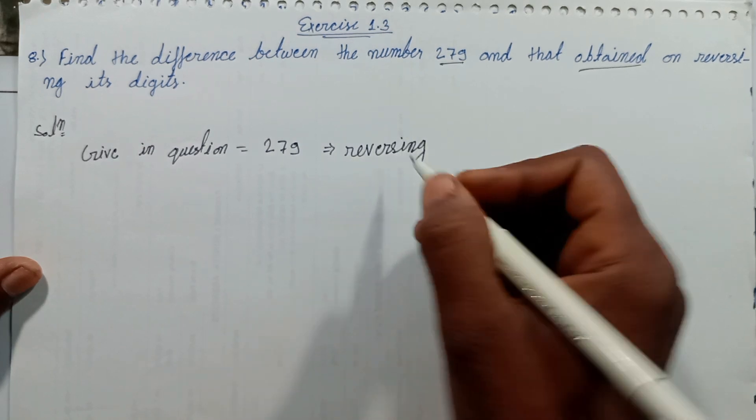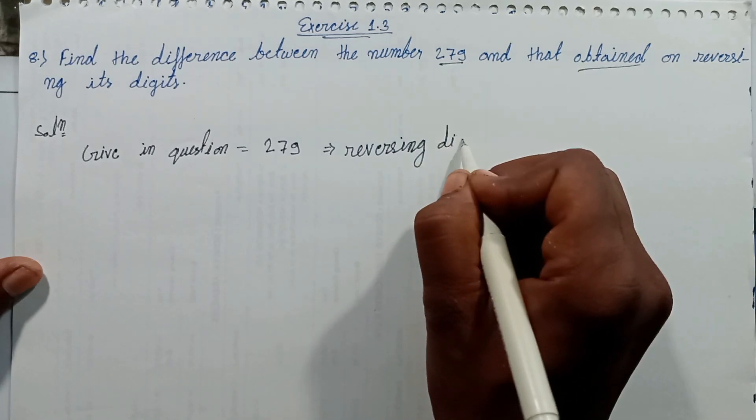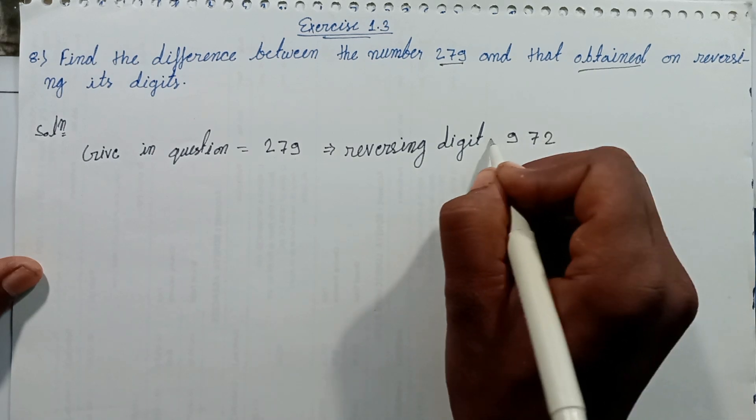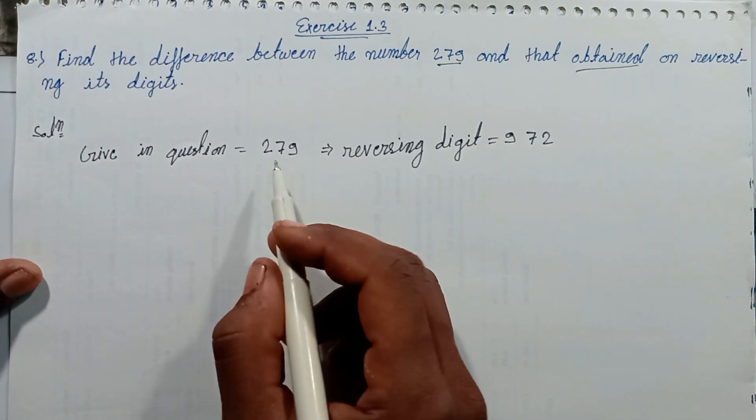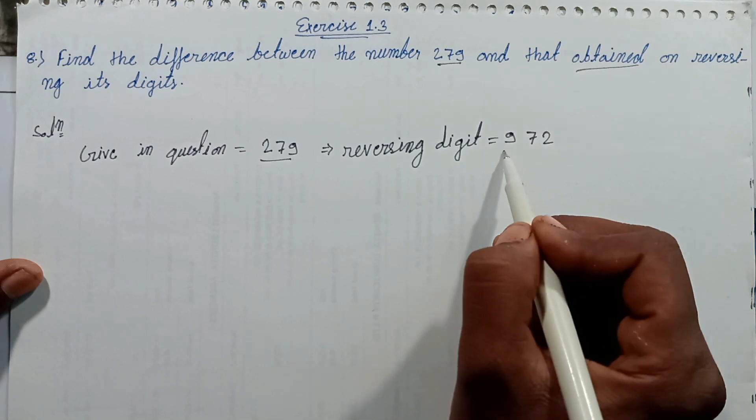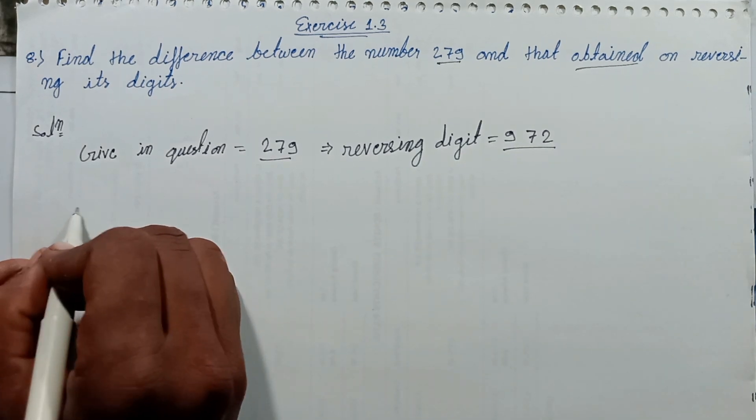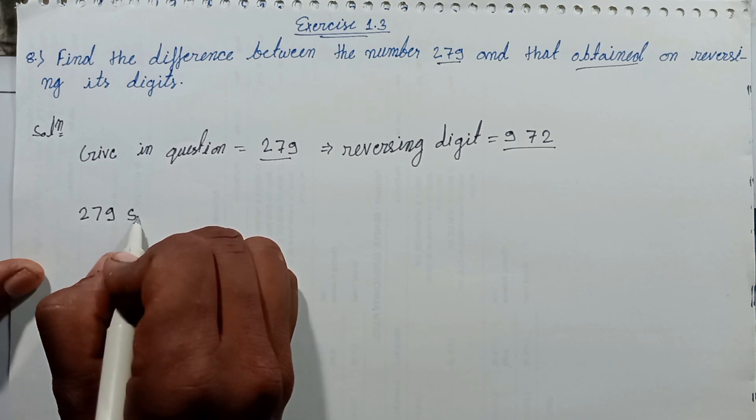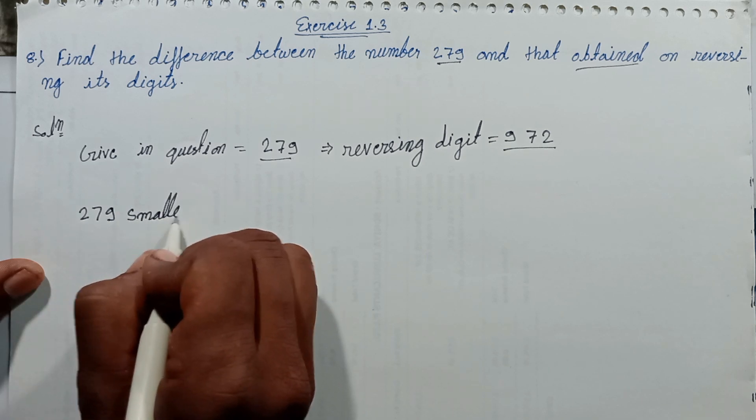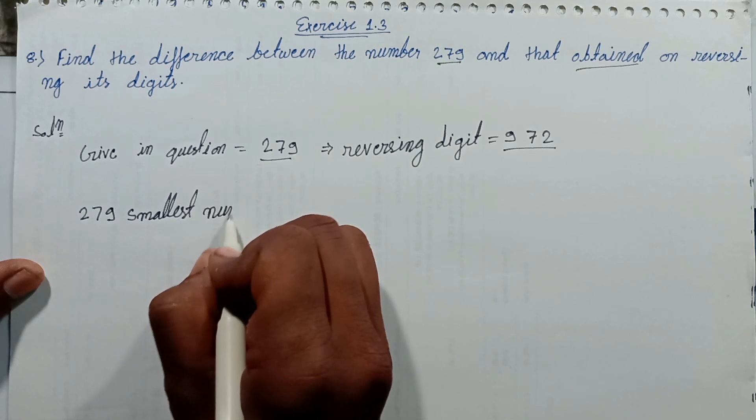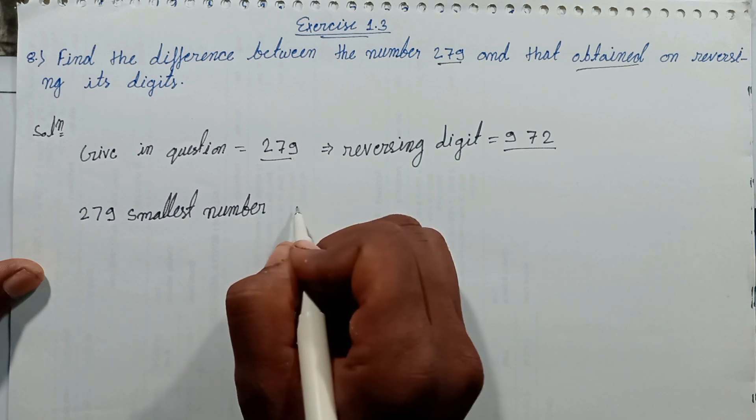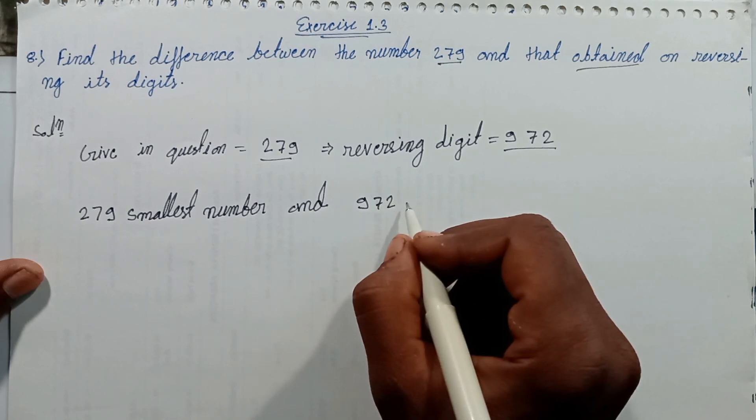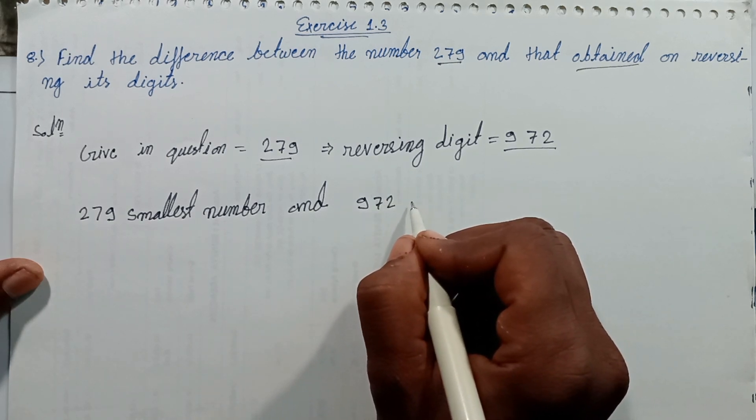Reversing. This number is the smallest and this number is greater. 279 smallest number and 972 largest number or greater number.